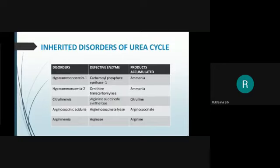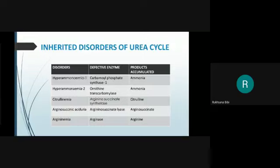The next disease is argininosuccinic aciduria, caused by argininosuccinate lyase deficiency. Argininosuccinate accumulates in the blood, urine, and cerebrospinal fluid. There is also hyperornithinemia, another inherited disorder of the urea cycle.